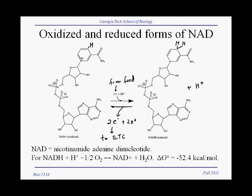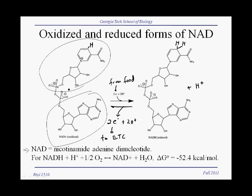NAD — nicotinamide adenine dinucleotide — is, as its name says, a dinucleotide. This is one nucleotide, this is a second nucleotide, so you can see the ribose here, and there's a nitrogenous base. This first base here in the bottom is adenine, and the base on top is not one of the four traditional bases — this is nicotinamide.